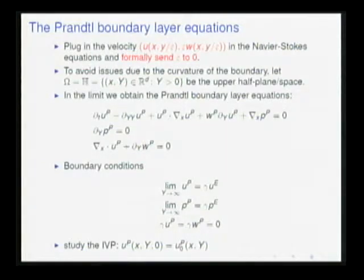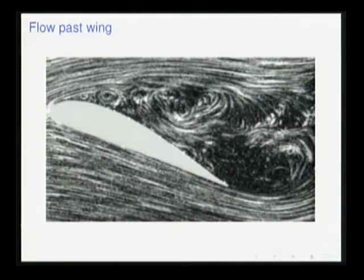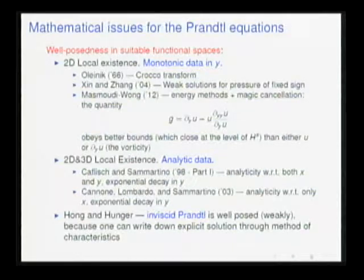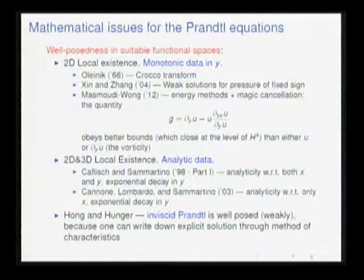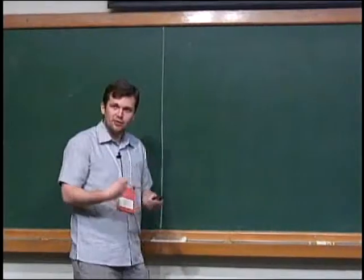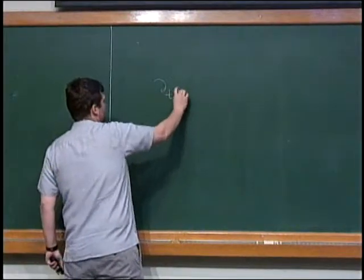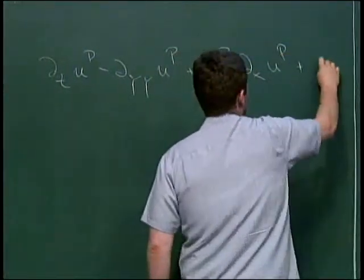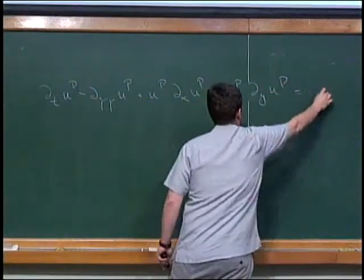In terms of the Prandtl equations, you can ask questions about stability. We are all familiar with pictures of realistic flows where Prandtl holds in some regions and probably not in others. Where Prandtl is valid is a very important question, and to address it one has to study the problem mathematically. In terms of stability — also known as well-posedness — there are basically two types of results. The first type goes back to Oleinik, where the idea is to assume the data is monotonic in the y direction.